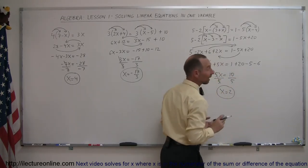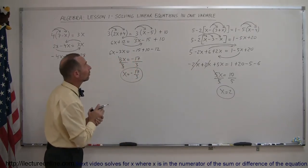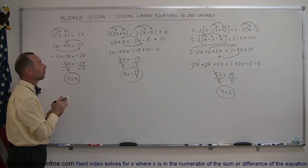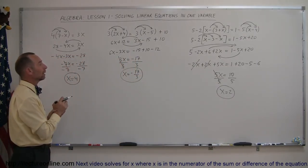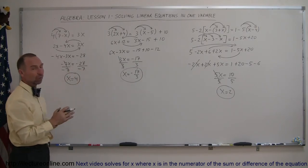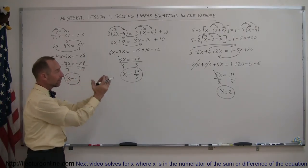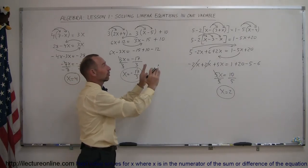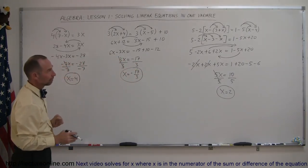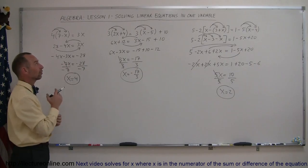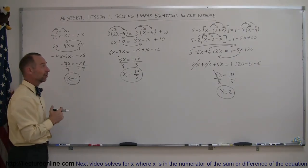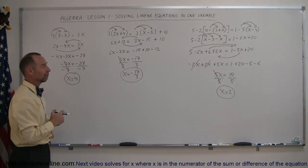And there you go — that's how you solve these linear problems to solve for one variable: get rid of the parentheses first, and if you have a combination of brackets and parentheses, work from the inside out — inside parentheses first, then the outside brackets. I'll have more examples of how to solve linear equations in one variable if you tune in to the next video.